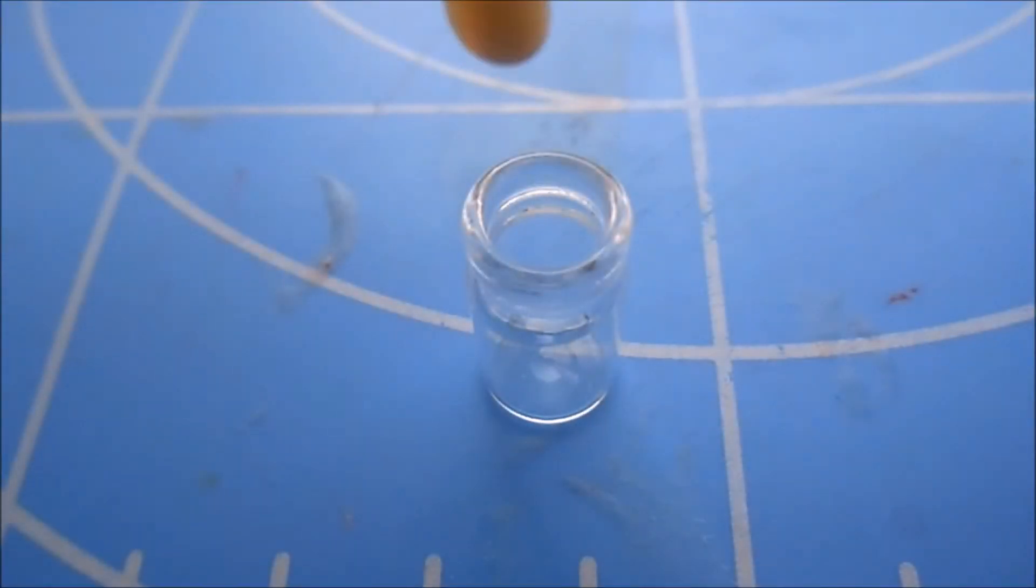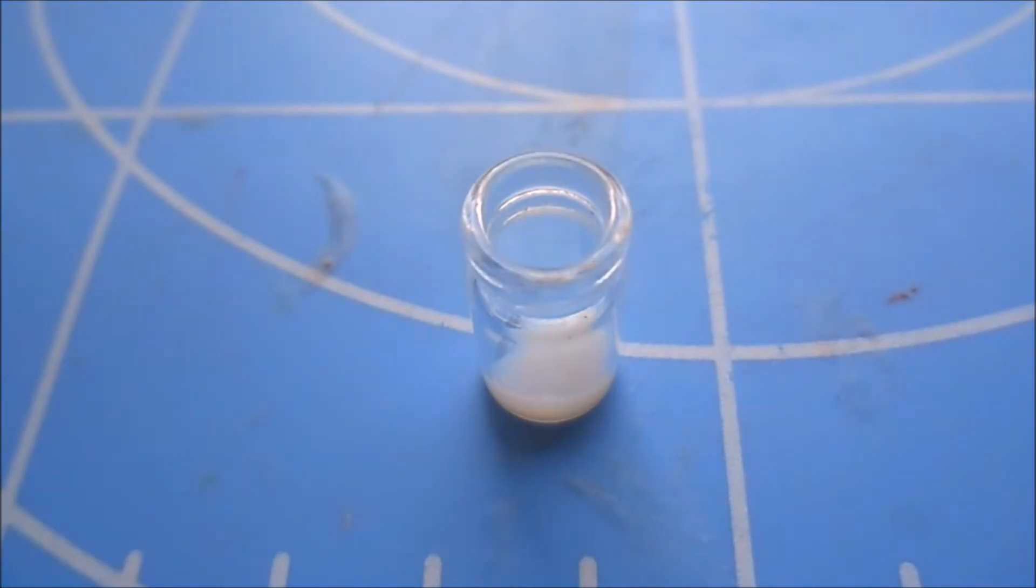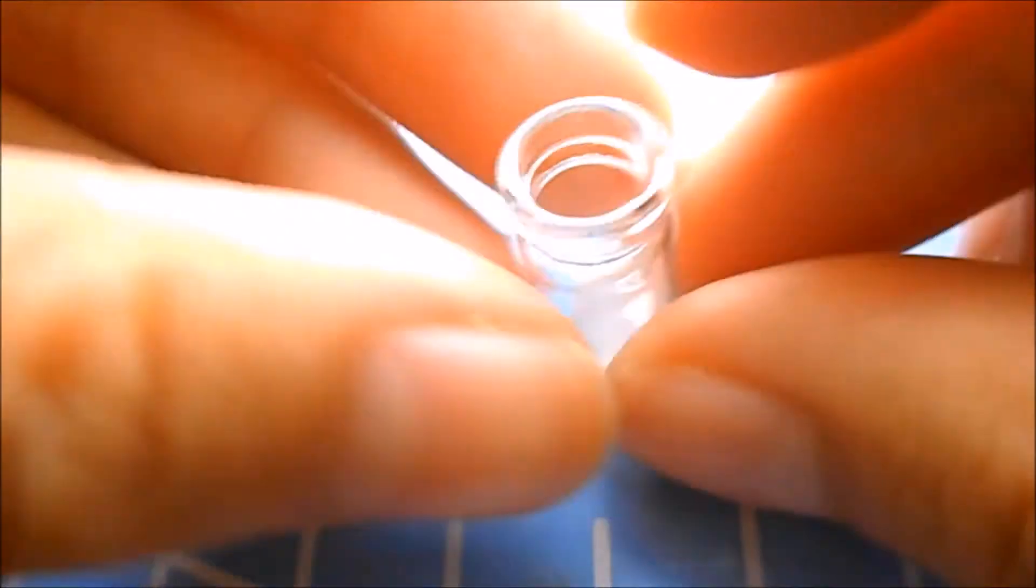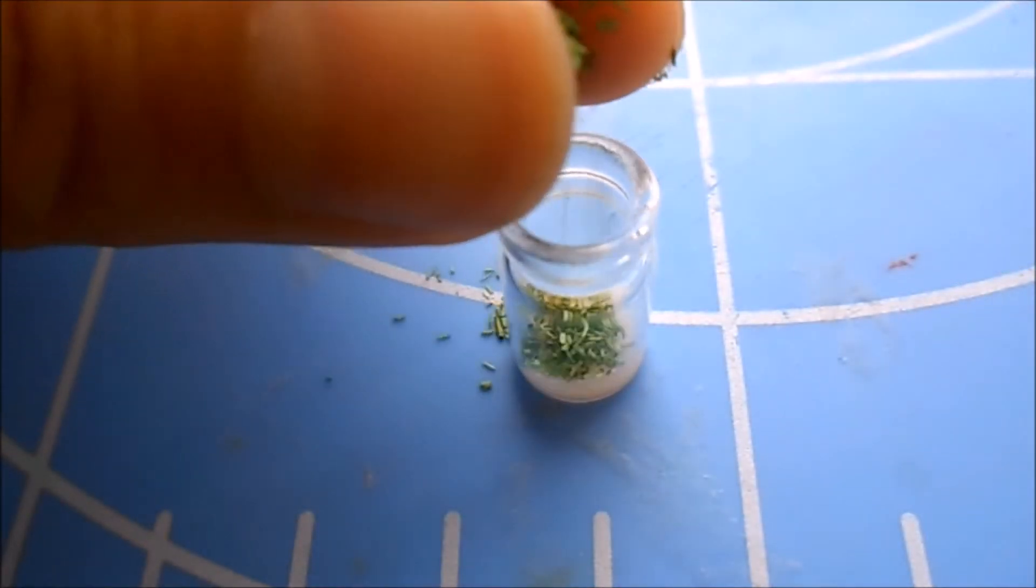Hi guys, so today we'll be making no face in a miniature bottle. First of all, what I'm doing is I'm just placing some normal craft glue at the bottom of the bottle.